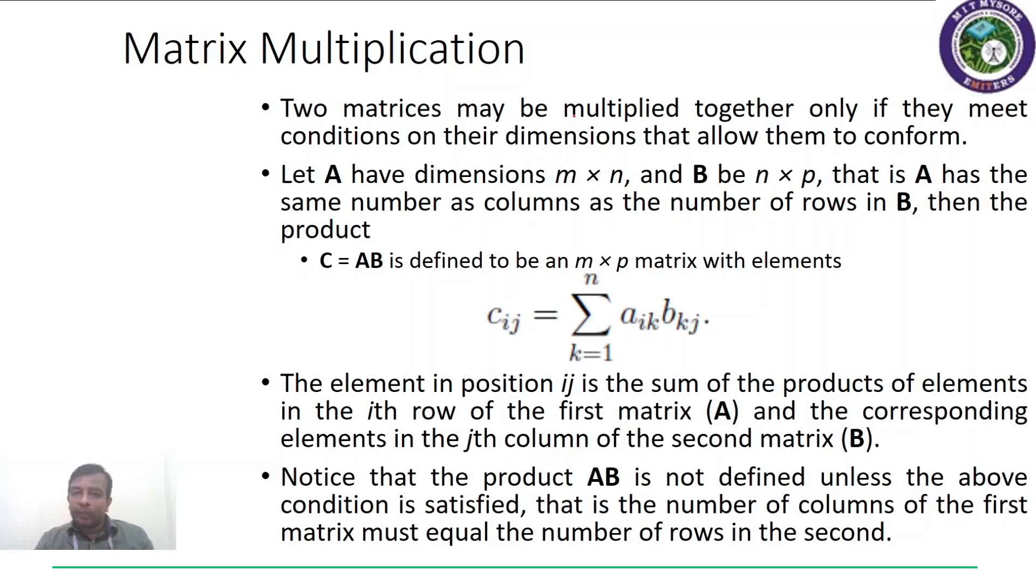Two matrices may be multiplied together only if they meet conditions on their dimensions that allow them to conform. Let A have dimensions m×n and B be n×p, that is A has the same number of columns as the number of rows in B. Then the product C = AB is defined and it will have a dimension m×p, that is the number of rows in the first and the number of columns in the second matrix.